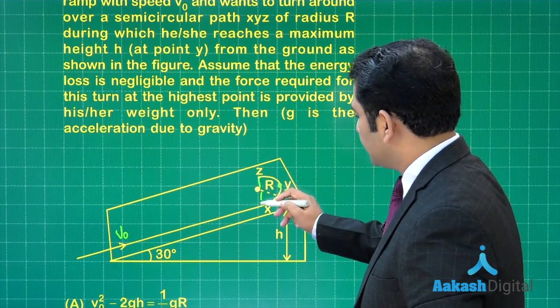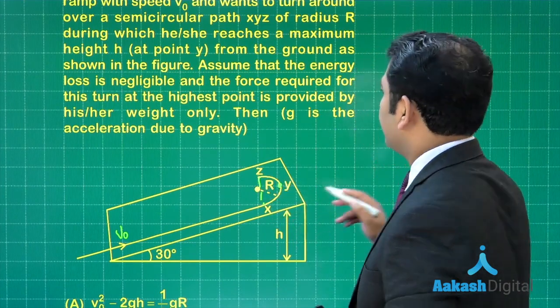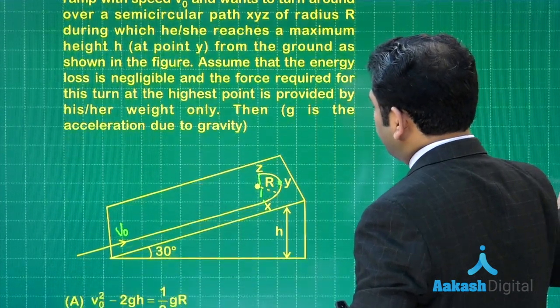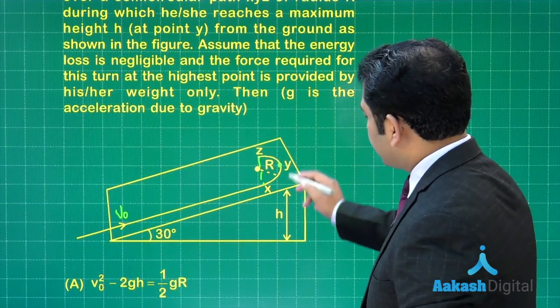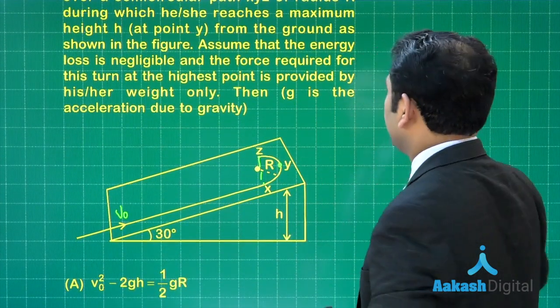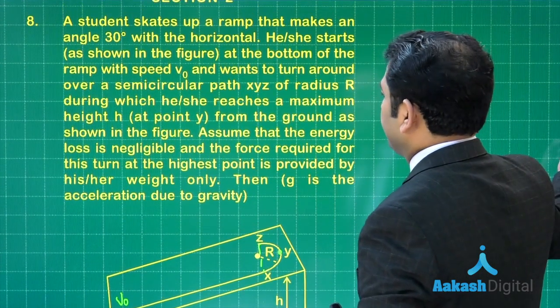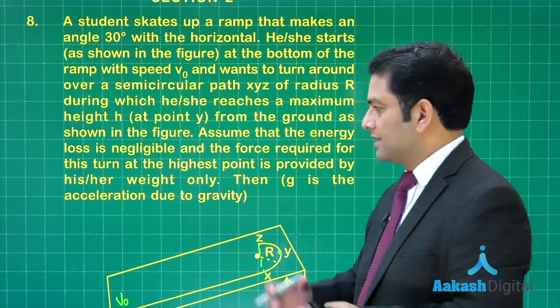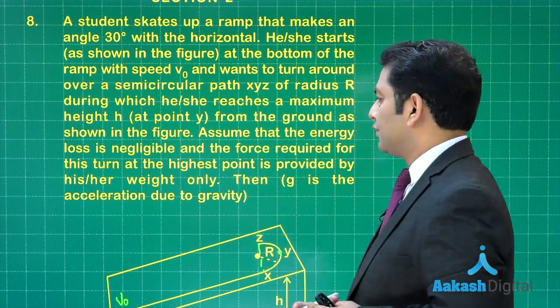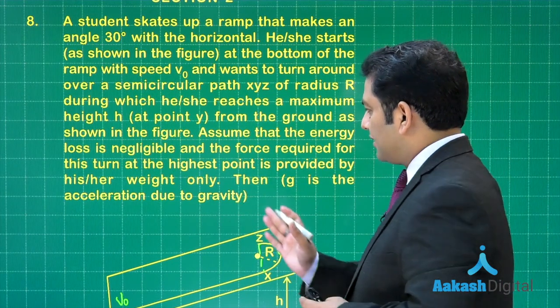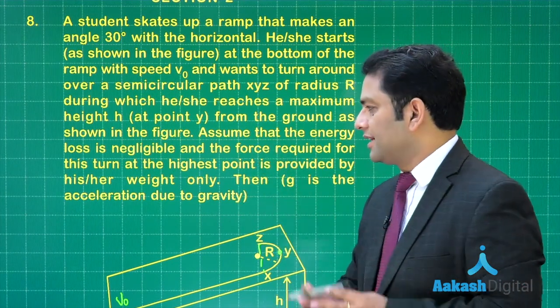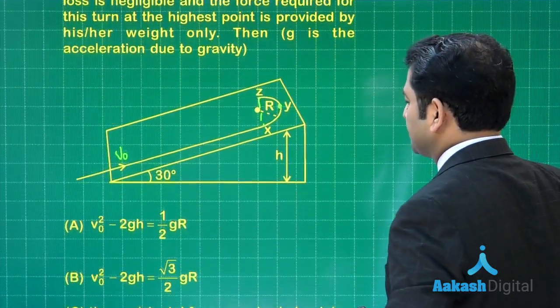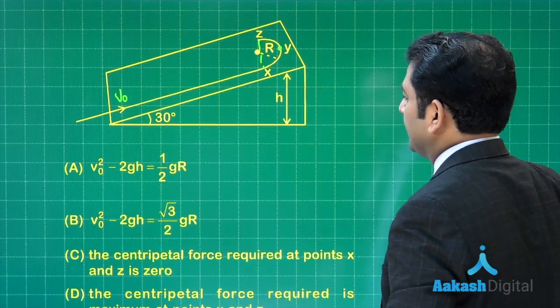Further, it says: wants to turn around over a semicircular path XYZ of radius capital R. This is the case XYZ, the semicircle with radius capital R. Y is the topmost point, and X and Z will be at the same level. This point is X, this point is Z, and the topmost point Y is at a height h above from the ground. Assume that the energy loss is negligible, and the force required for this turn is provided by the weight.